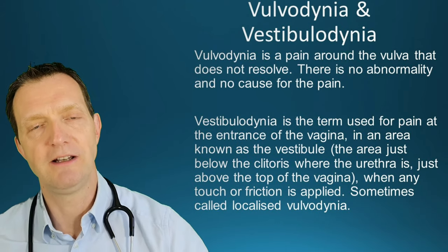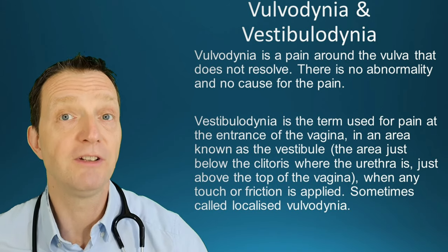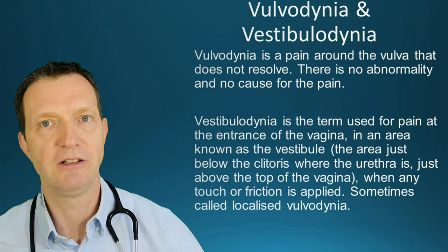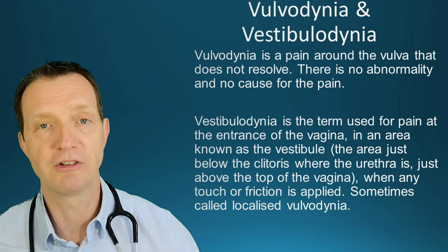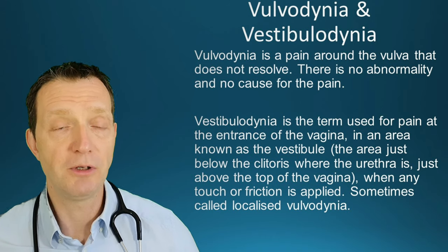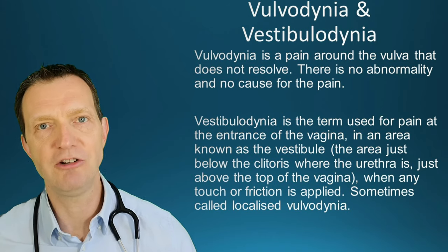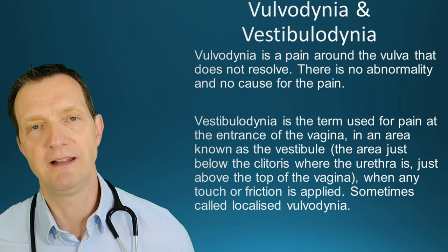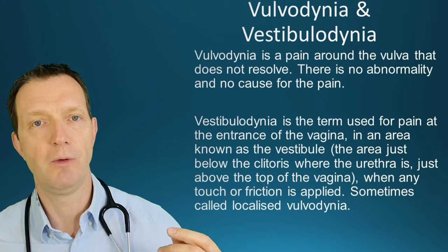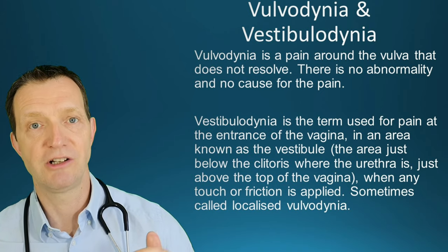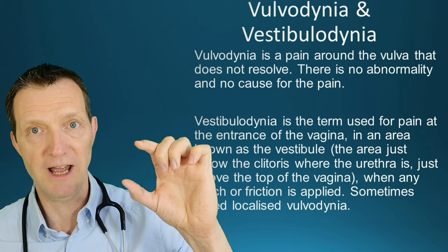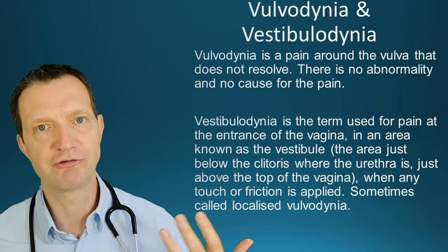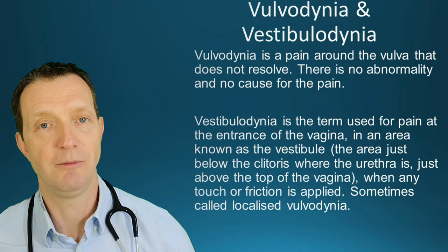Vulvodynia and vestibulodynia is pain around the vulva that does not resolve and there's no abnormality and no obvious cause for the pain. Vestibulodynia is a term used for when the pain is at the entrance of the vagina, in an area known as the vestibule — that's the area just below the clitoris, where the urethra is, just at the top of the vagina. When any kind of touch or friction is applied, it is painful.